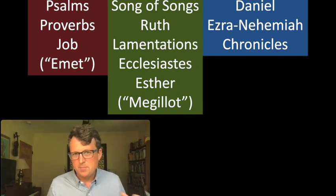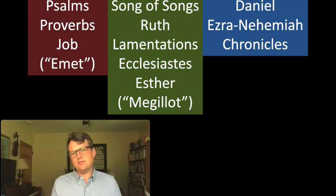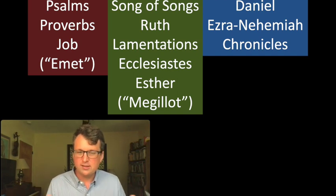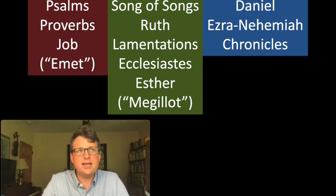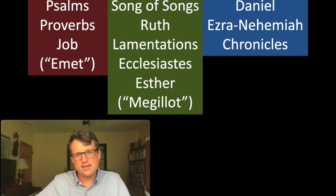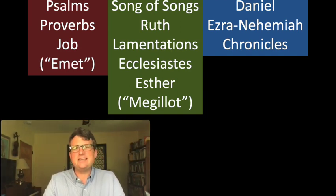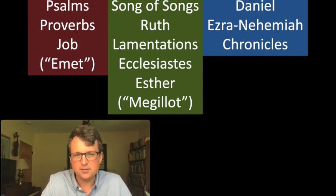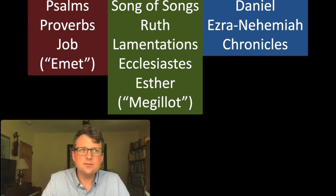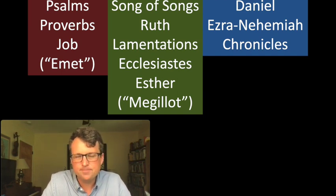All to say that these five major festivals each have a book associated with them that's read on those days, and that constitutes this five-scroll collection, the Megillot. And then we have three books — Daniel, Ezra, Nehemiah, and Chronicles — which are all written quite late and deal with, or at least edge into, the Persian period. These late historical-ish books got collected together and formed the very last part of the Ketuvim, or the writings.